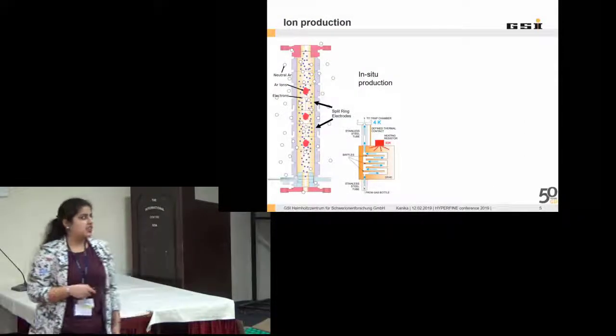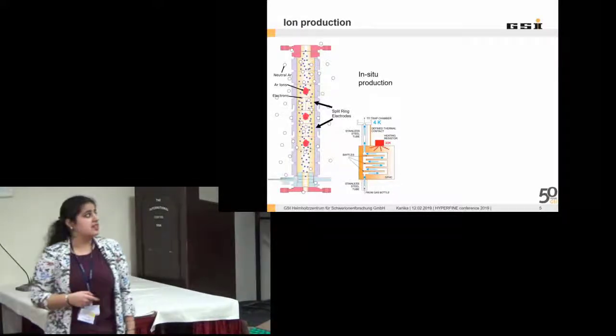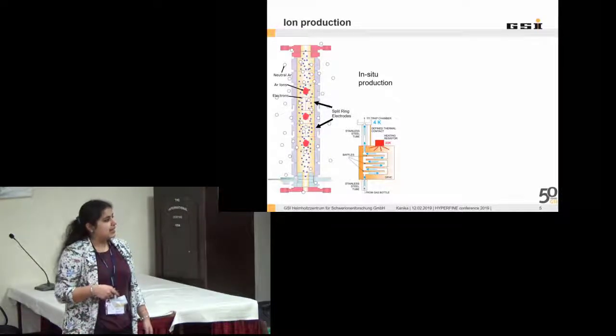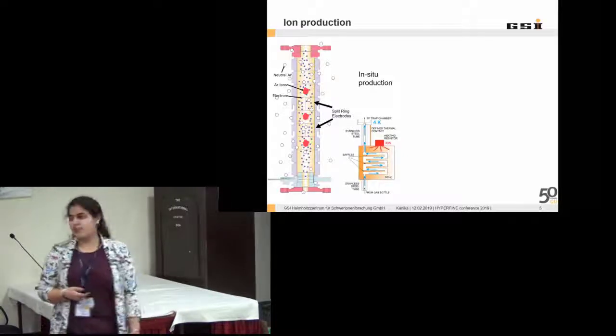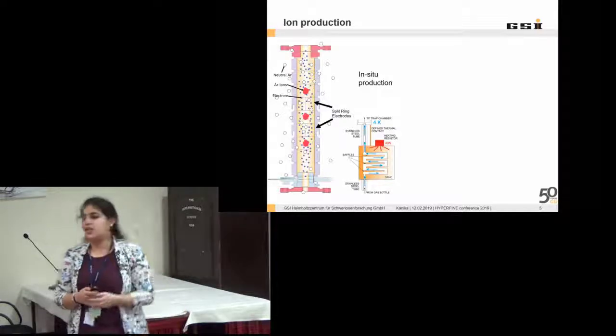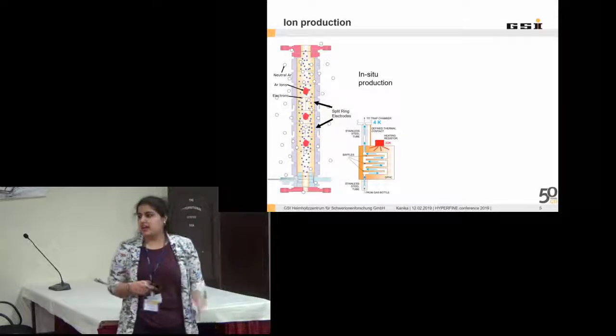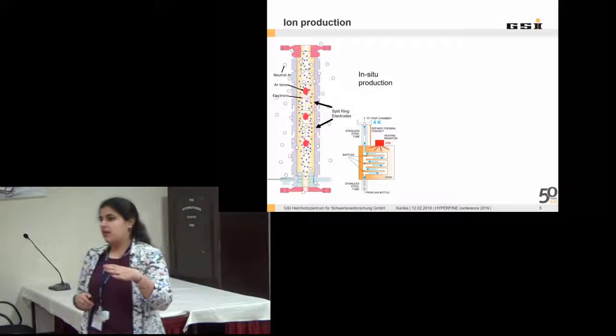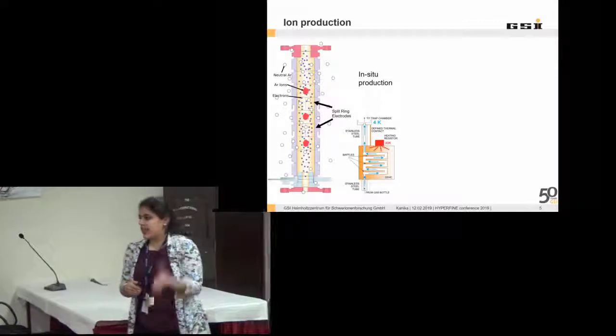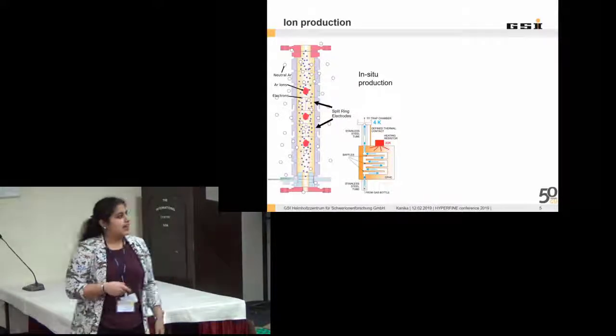Coming to the ion production techniques, we can produce ions in two ways. One can be in situ production of ions, which is what we do now for the argon 13+. We have a gas inlet here. This is the valve. This is known as flotte-lotte because of the shape. It's a special valve. This particular shape will provide a large area and the gases will be absorbed. But since this will be also at 4 Kelvin, it will be frozen.